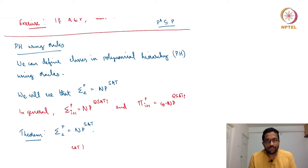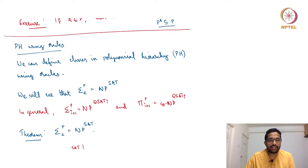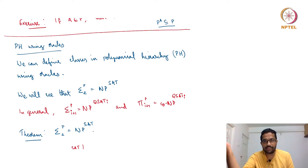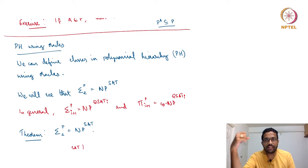Hello and welcome to lecture 24 of the course Computational Complexity. In the previous lecture we saw Oracle Turing machines. In this lecture we will see how we can view the polynomial hierarchy — classes such as Sigma_2, Sigma_3, Pi_2, Pi_3, etc. — defined using alternating quantifiers — and arrive at them using Oracle Turing machines.